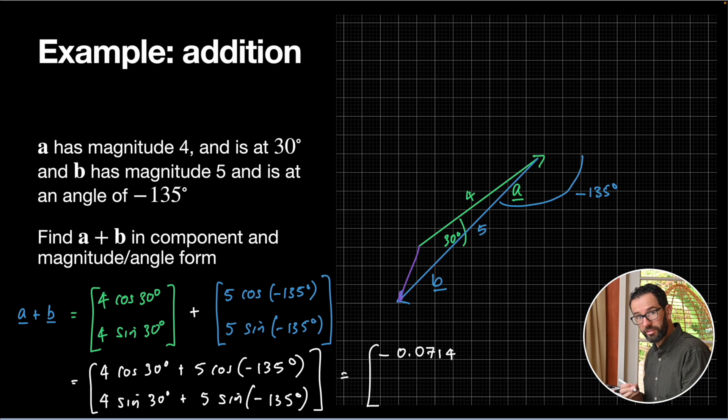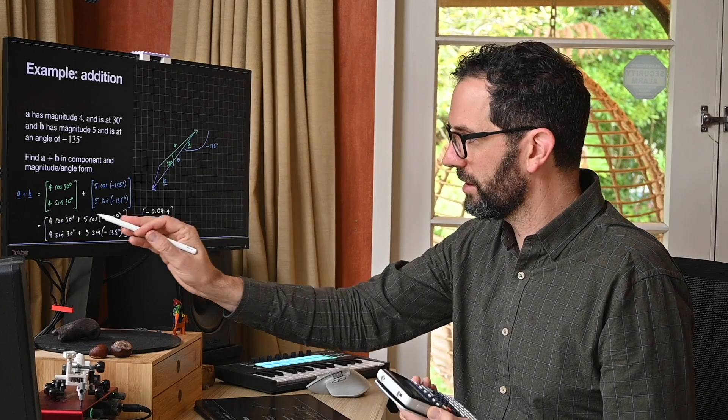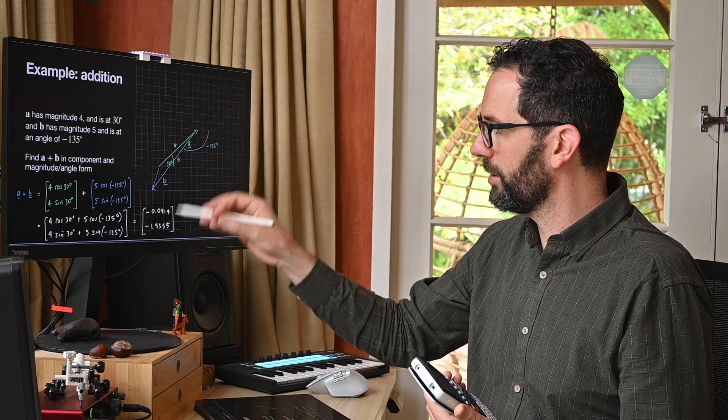0.0714 for my x component. For my y component, I'm going to type in 4 sine 30 plus 5 sine negative 135. The y component will be negative 1.5355. And that is my vector sum. So I'm just using my normal vector sum of adding the components together, and that gives me what that vector is. You can see that my picture is not perfectly to scale, but it is going left by a little bit and down by a bit more.